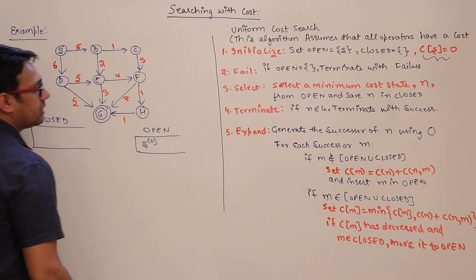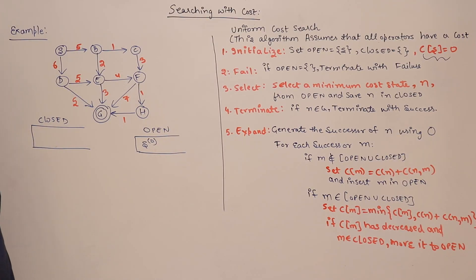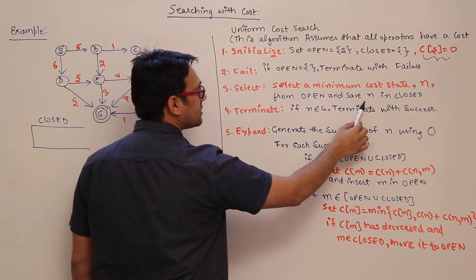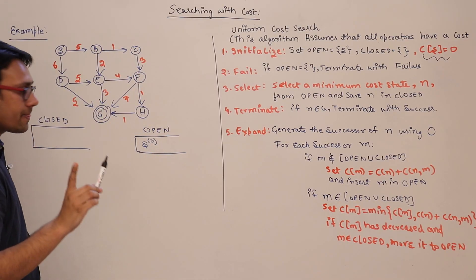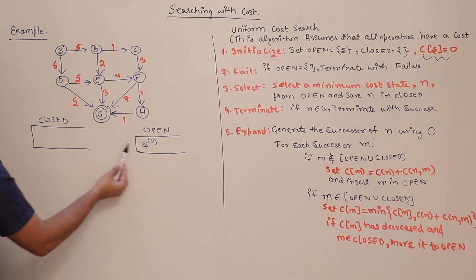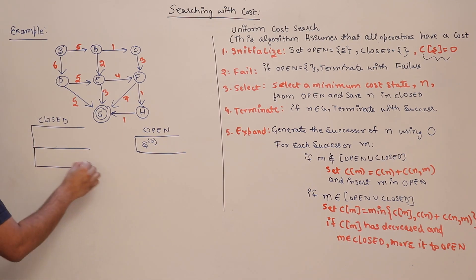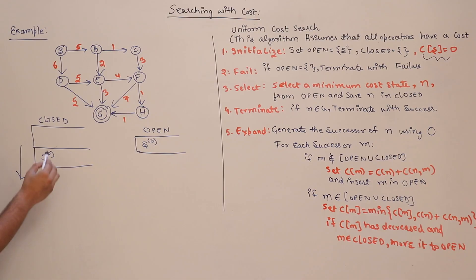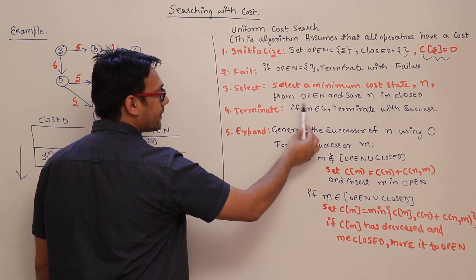Step 2: if open is empty, fail — but open is not empty so this step will not execute. Step 3: select the minimum cost state N from open and save it in closed. Currently open has only one state, S, so we take S and store it in closed. The open list now has S removed.